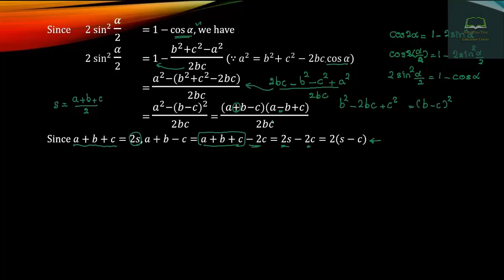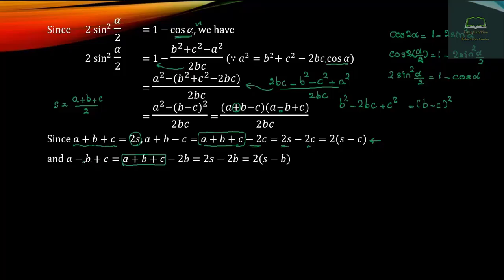With a minus b plus c, we get 2 into s minus b. And a minus b to 2 gives s minus c. So with a minus b plus c, Q gives 2s minus c equals 2 into s minus c. And 2 into s minus b.